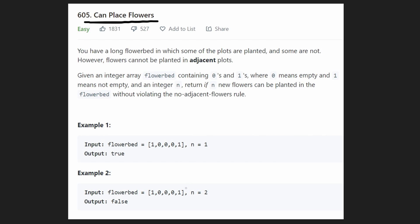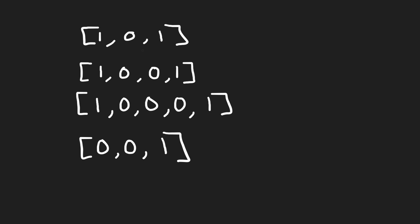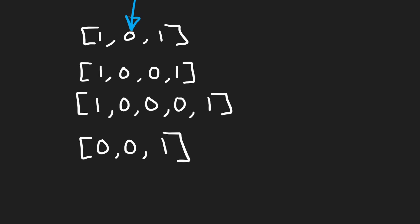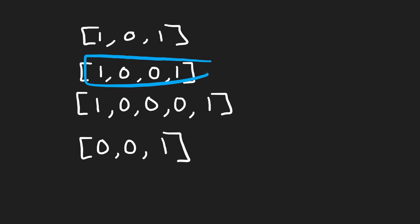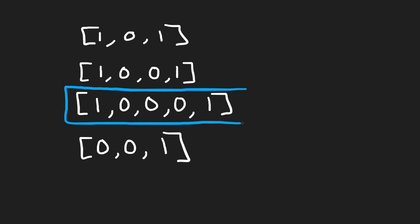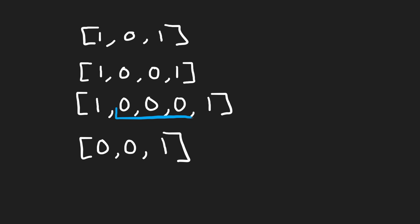The difficult part of this problem is the edge cases. A single contiguous empty spot doesn't allow us to place a flower because both boundaries are flowers. Two contiguous empty spots aren't enough either, since both are next to flowers. But three contiguous empty spots are enough — placing the flower right in the middle means the spots adjacent to it are empty, so that's allowed.